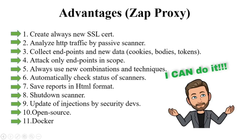Passive scanner: ZAP can detect many issues without attacking mode or changing data and parameters. It displays problems that already exist in functional traffic. ZAP always uses new data and combinations from HTTP traffic and from its huge storage of many types of different injections, which it uses for attacking mode.